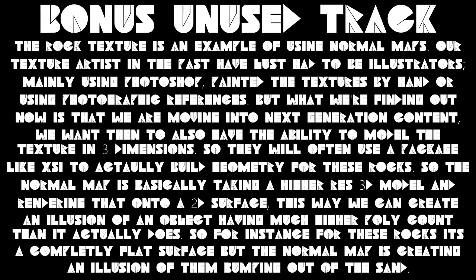The rock texture is an example of using normal maps. Our texture artists in the past have just had to be illustrators — mainly use Photoshop, paint textures by hand, or use photographic reference. But as we're moving into next generation content, we want them to also have the ability to model the texture in three dimensions. They'll often use a package like XSI to actually build geometry for these rocks. The normal map is basically taking a high-res 3D model and rendering that onto a 2D surface, creating the illusion of an object having a much higher poly count than it actually does. For instance, for these rocks, it's a completely flat surface, but the normal map is creating the illusion of them bumping up out of the sand.